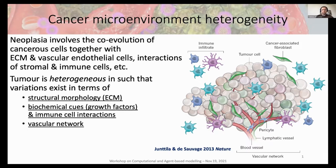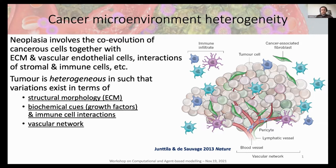So let me briefly say a few things about cancer. Neoplasia involves the coexistence and co-evolution of cancer cells together with the extracellular matrix, vascular endothelial cells, interactions of stroma, and immune cells. However, the greatest challenge for cancer biologists is that the tumor is heterogeneous — it's not the same in all patients. There are variations in structural morphology in the extracellular matrix, and stromal cancer-associated cells have significant plasticity regarding activation status, localization, and so on.